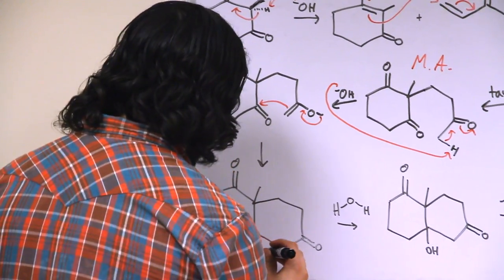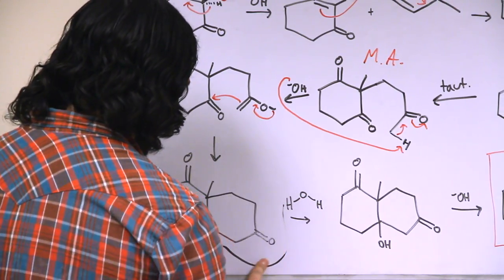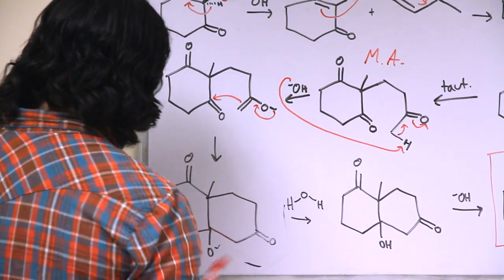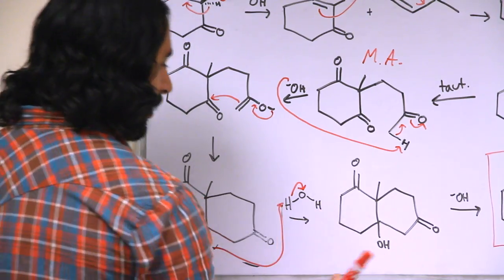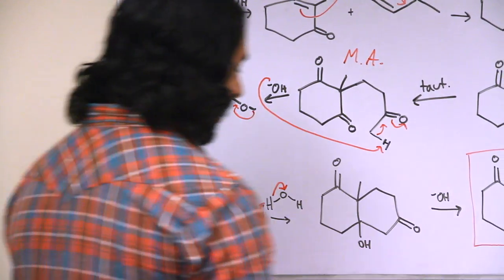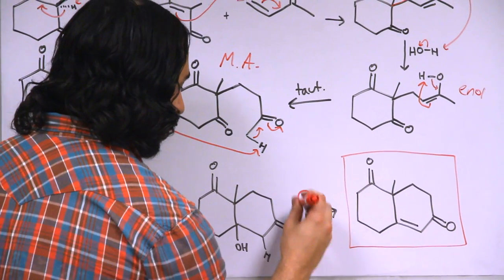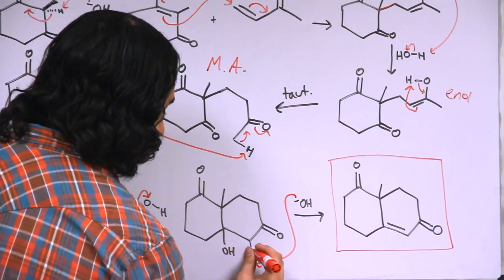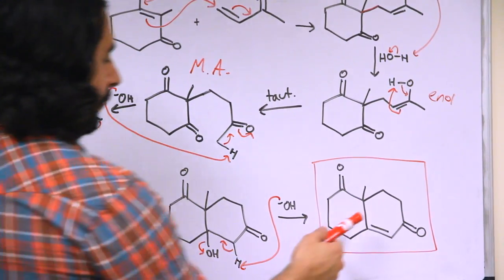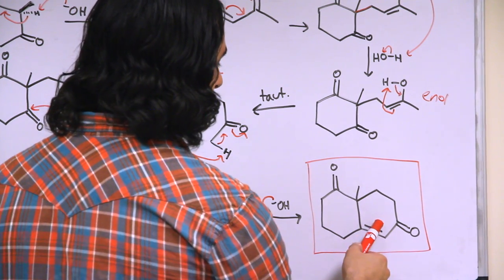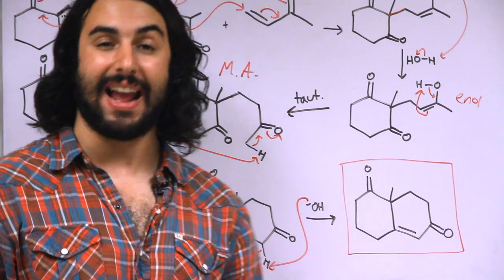And then we will protonate again just as we did. So we'll go ahead and protonate again, giving us the hydroxyl. And then the last step of the aldol condensation we know is going to be an elimination. So, that gives us the unsaturation right there. And so that's our Robinson annulation product.